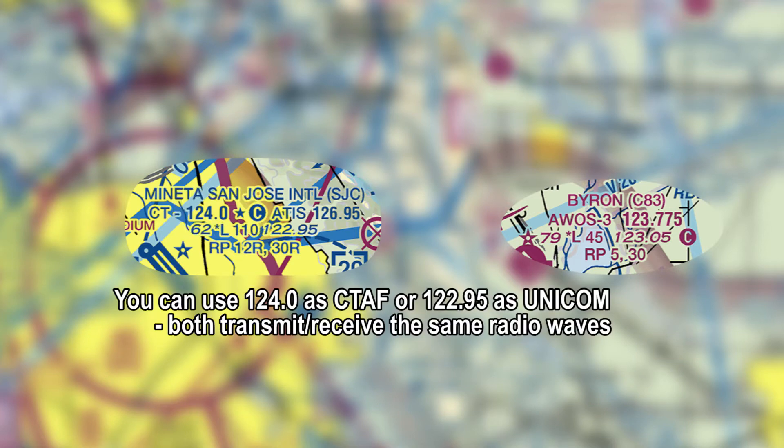The next line starts with elevation: San Jose is 62 feet and Byron is 79 feet. The star L on both means runway lighting is part-time — check the chart supplement to find out the specifics, as sometimes it's pilot-controlled lighting. The next number is the longest runway: San Jose is 11,000 feet (add two zeros) and Byron is 4,500 feet. The CTAF frequency is 122.95 for San Jose when uncontrolled, and 123.05 for Byron — indicated with a C. Right traffic patterns are noted for specific runways; if nothing is indicated, it's left traffic.